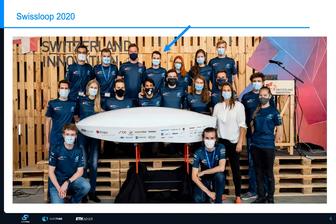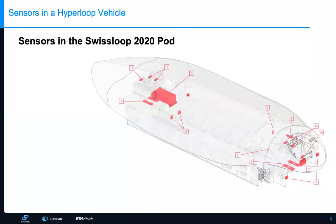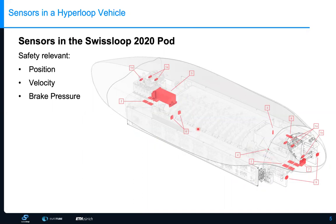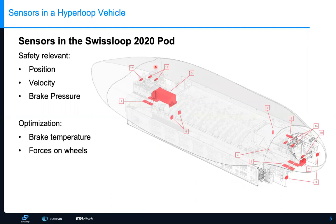This is the team 2020 pod that we built. It has a lot of sensors — some are safety-relevant, like position and velocity sensors, including the big sensor in the middle and the smaller sensor at the back. There are also safety-relevant sensors like brake pressure that needs to be monitored so the brake can be engaged at all times. Additionally, there are sensors used for optimization like brake temperature, forces on the wheels, and forces on the limb.